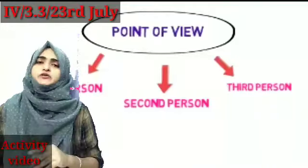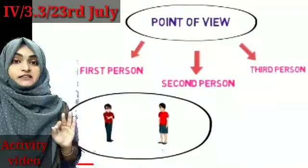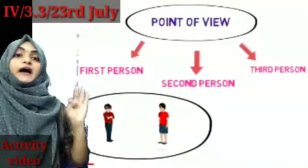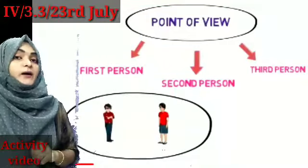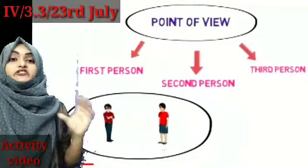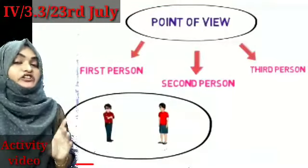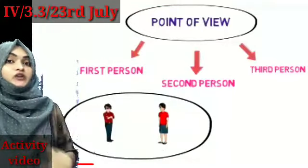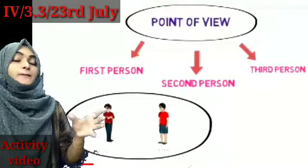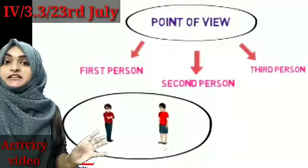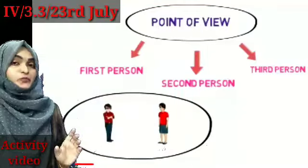Let me give you an example. I am going to introduce three characters: Ram, Shyam, and Meera. Ram and Shyam are in one room, and they are talking something about Meera. But Meera is not present in that room — she is outside.